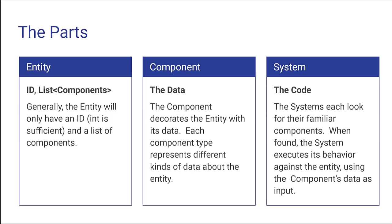Once everything is set up, it just happens. The system is where the code is. The system will go through all the entities in the game, look at their components, and find the components it knows how to deal with. A text rendering system will look for text components, and when it finds them it'll render them to the screen at the X, Y coordinates the component specifies. If I want to move something around the screen, I just change the X, Y parameters of the component and the system puts it wherever I tell it.